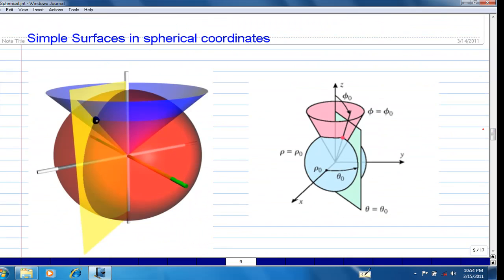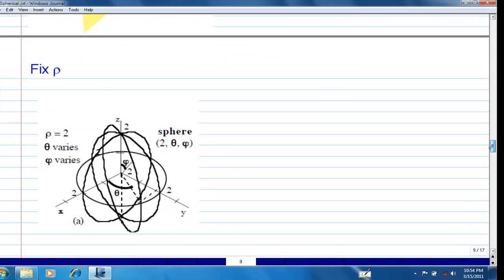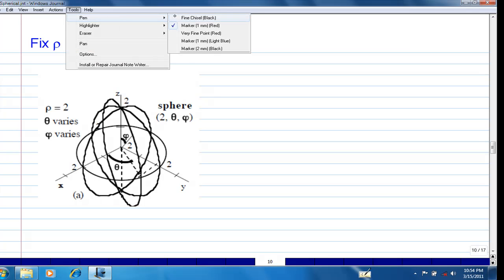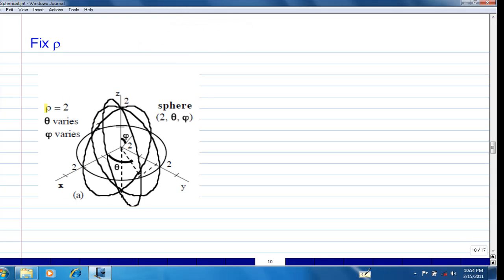Let's look at some simple surfaces in spherical coordinates. If you have a surface rho equal rho zero, what you're going to get will be a sphere. If you have theta equal to theta zero, you get a half plane. If you fix rho, let's say rho is always equal to two, you're going to get a lot of circles over radius two, and together they'll form a sphere at radius two.